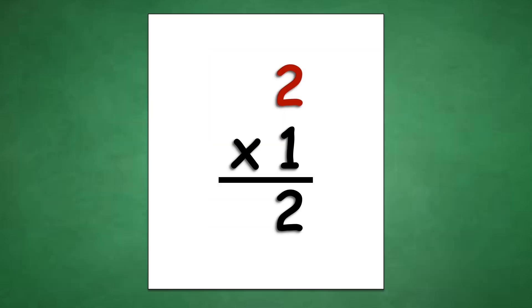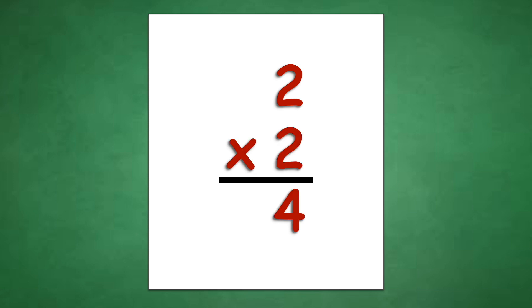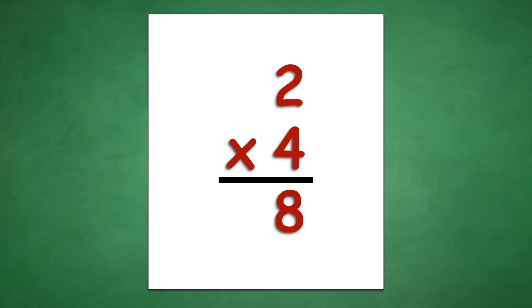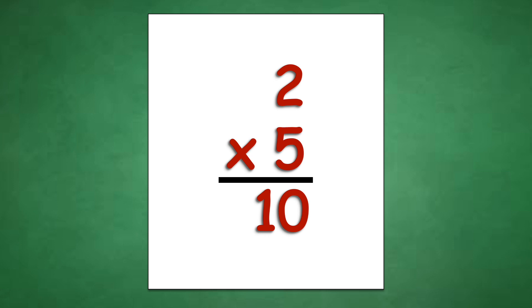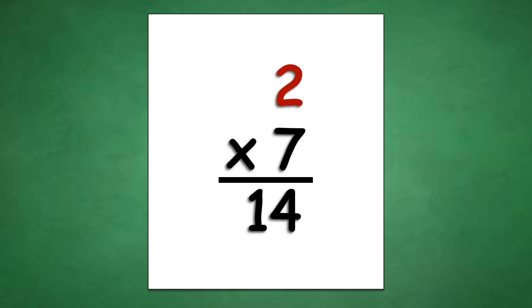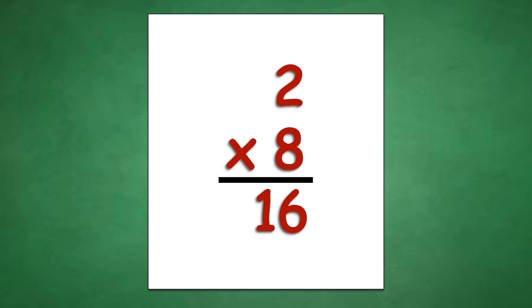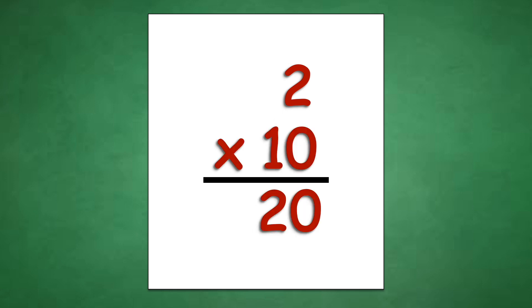Table of 2: 2 x 1 equals 2, 2 x 2 equals 4, 2 x 3 equals 6, 2 x 4 equals 8, 2 x 5 equals 10, 2 x 6 equals 12, 2 x 7 equals 14, 2 x 8 equals 16, 2 x 9 equals 18, 2 x 10 equals 20.